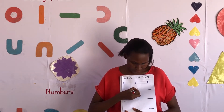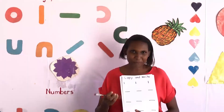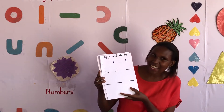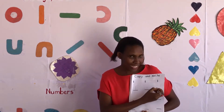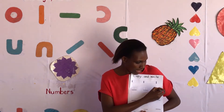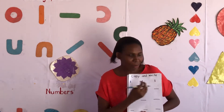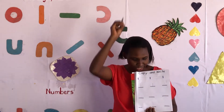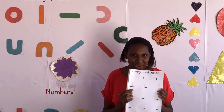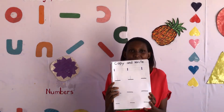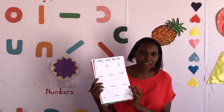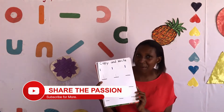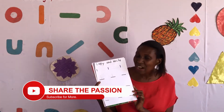Number one, number one — yay! Here is my number one. Again, let us do another one. Let us write another one. Number one — make sure it is straight, a standing stick straight. Here is my number one. And you at home, you're going to do the same like Teacher Esther. You're going to write number one.